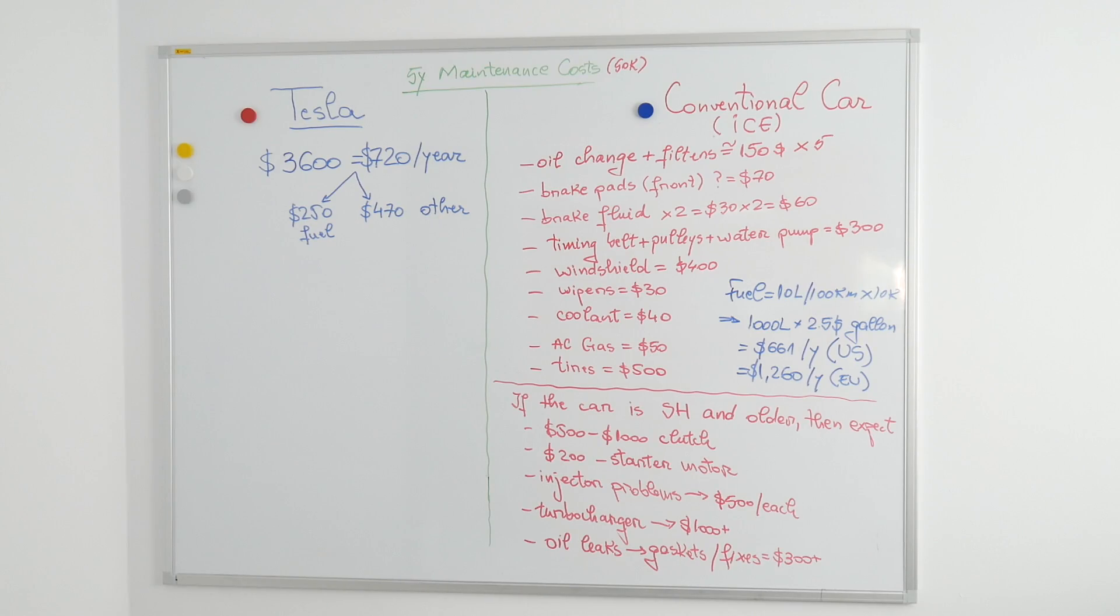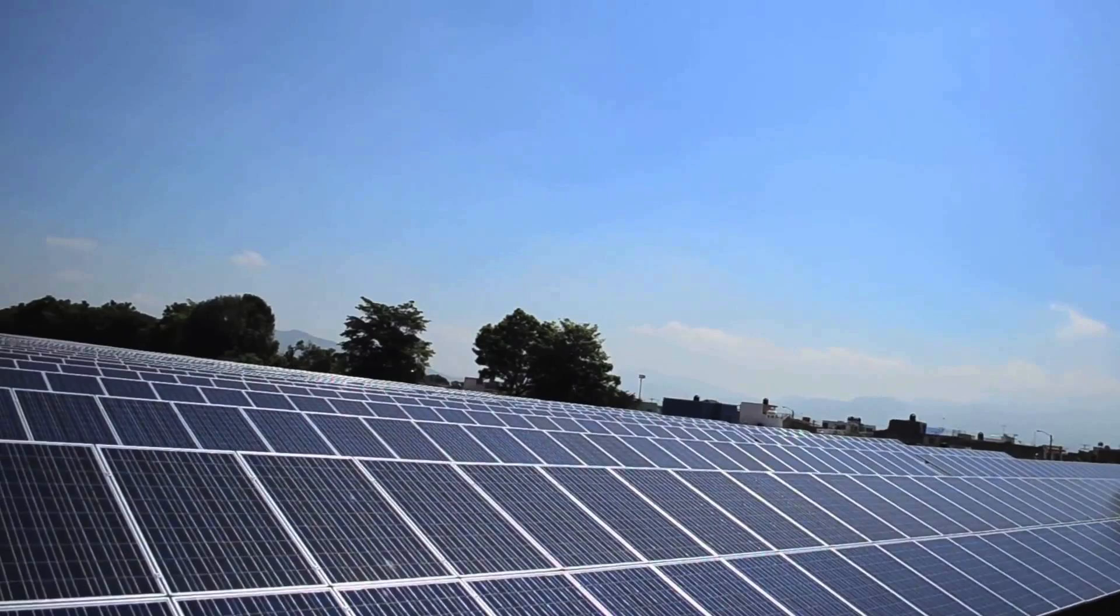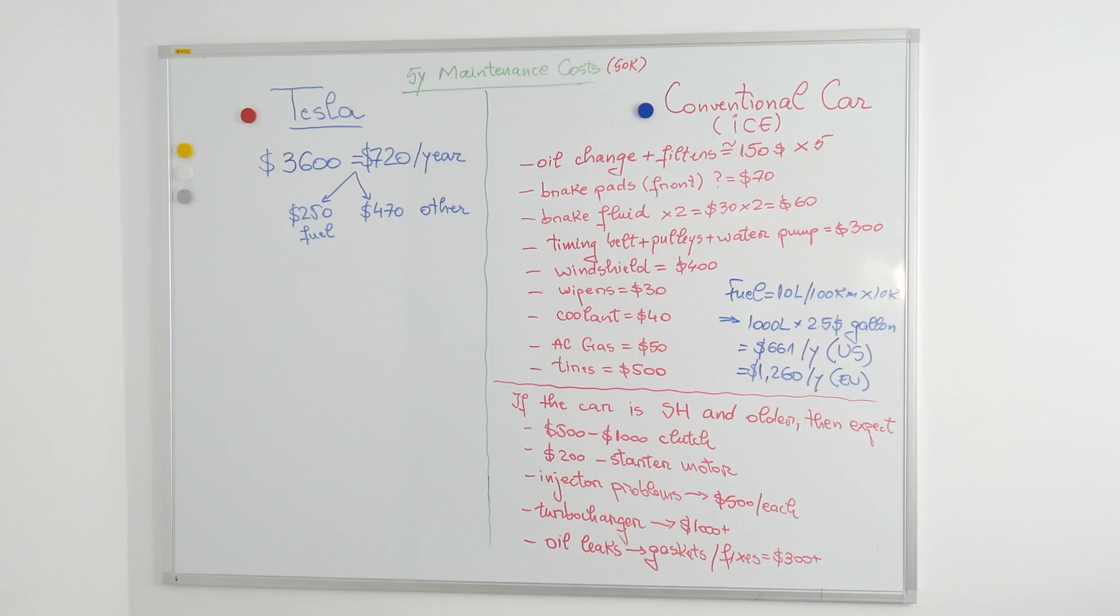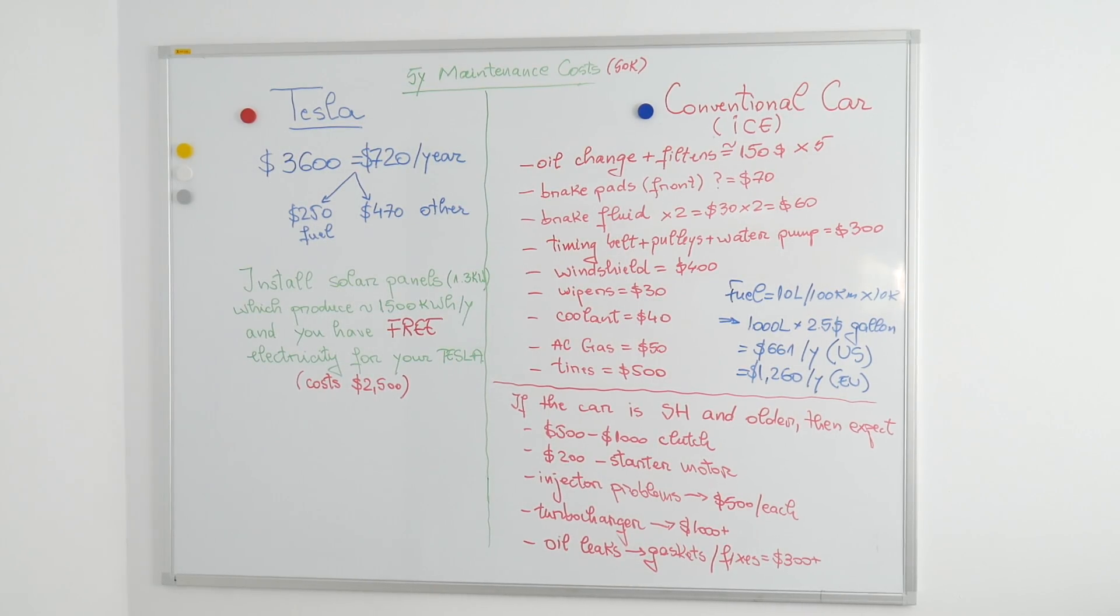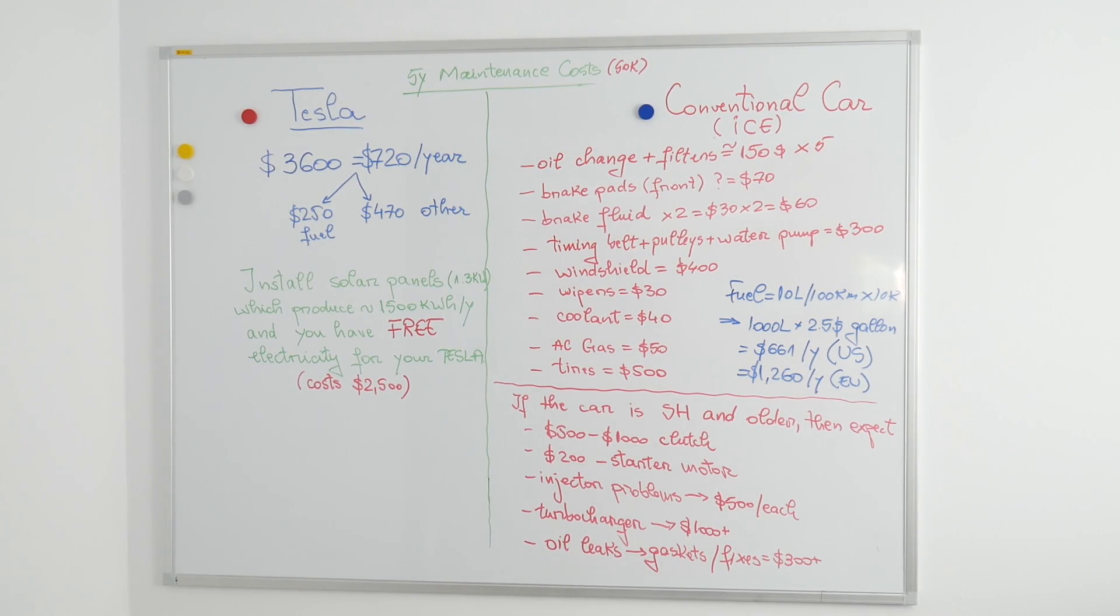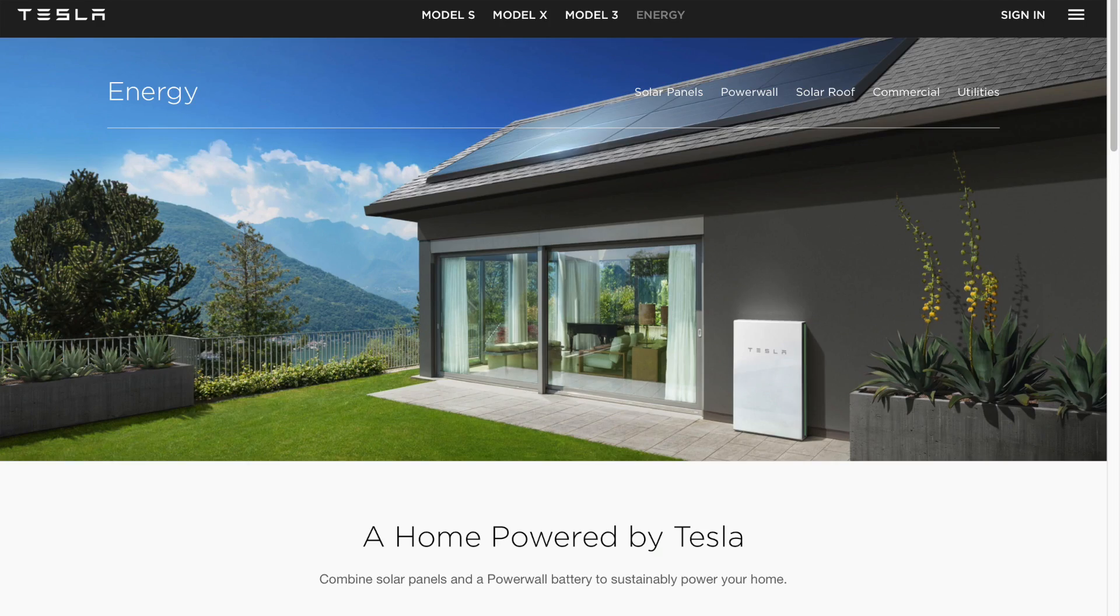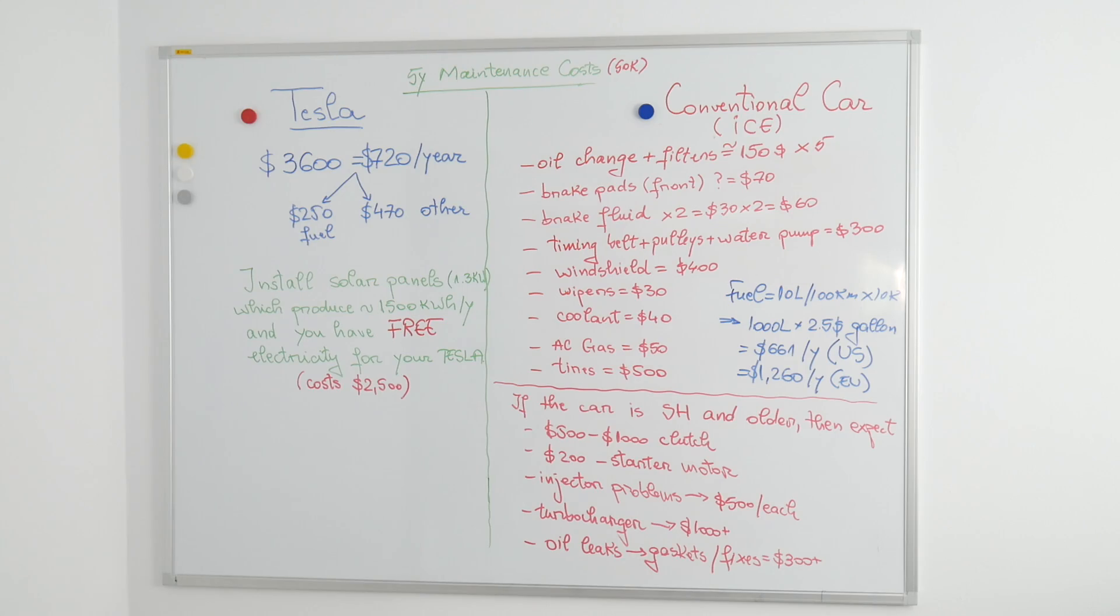Now here's the thing, if you would install solar panels with a power output of 1.3 kilowatts, you would save those $250 for fuel each year. The solar panel system would cost you around $2500, and guess what? Even Tesla themselves are selling solar panels, so if you get the car and the solar panels, you might get a great offer.